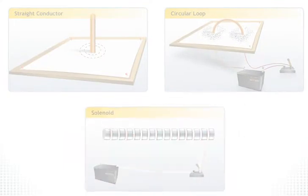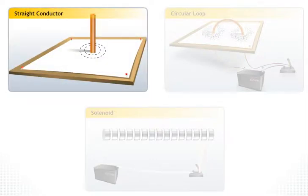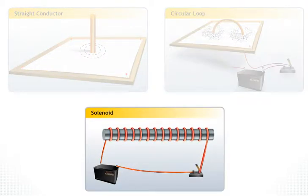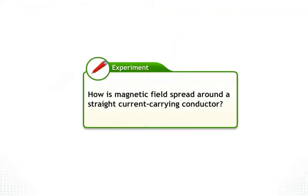Magnetic field lines vary with the shape and form of the conductor. Let's take a look at the magnetic field and field lines around a straight conductor, a circular loop and a solenoid. An experiment will help you understand how a magnetic field is spread around a straight current carrying conductor.